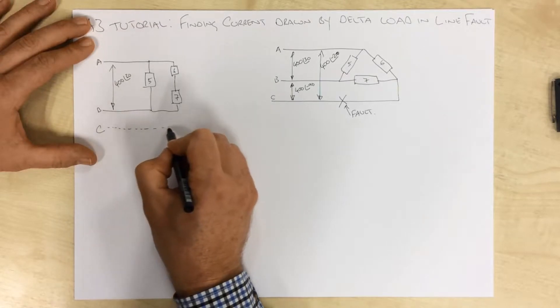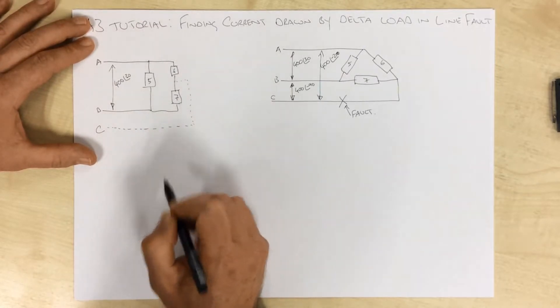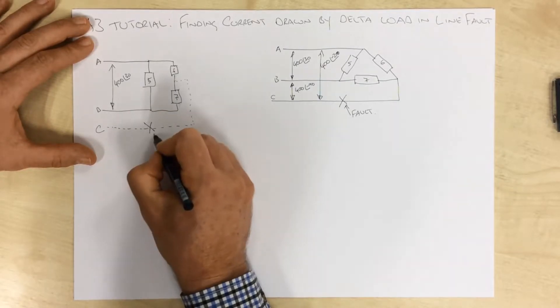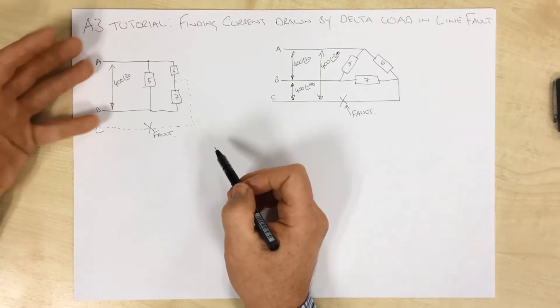If that fault wasn't in existence, we would have a path up there, but as I've pointed out, we have a fault there. So this is essentially our circuit.